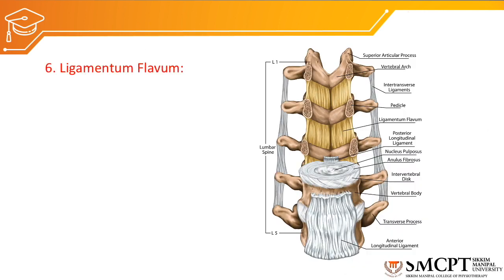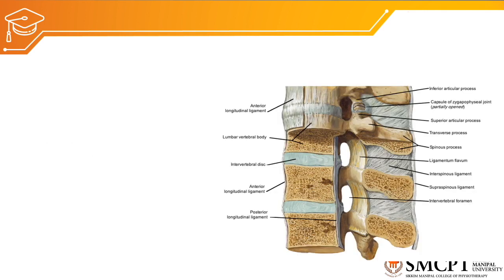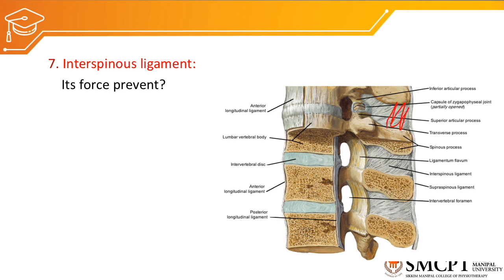Ligamentum flavum is situated between the lamina of the vertebral spine — between the superior vertebral lamina and the inferior vertebral lamina. It generates force which prevents excessive flexion as well as lateral flexion. The interspinous ligament is situated between the spinous process of the superior vertebra and the inferior vertebra, and it generates force which prevents excessive flexion.